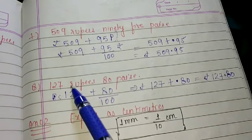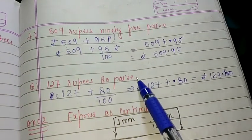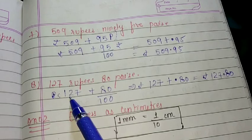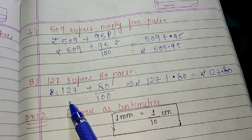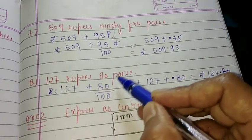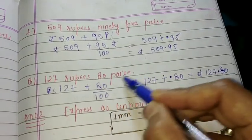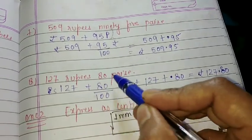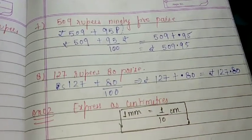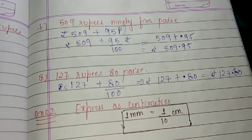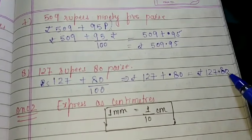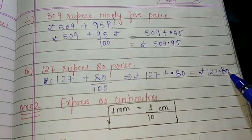Question 8: 127 rupees plus 80 paisa. 127 is already in rupees, so we will not touch this one. We have to convert this 80 paisa into rupees by dividing it with 100. So I get rupees 127.80 — my answer is 127.80.